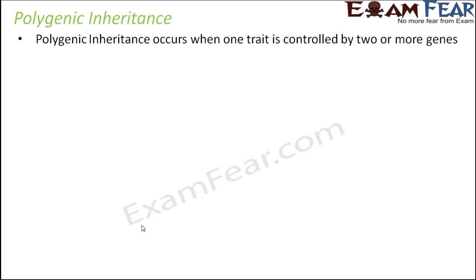Poly means many. So when one trait is controlled by two or more genes — basically one trait controlled by multiple genes — that is polygenic inheritance. When we say controlled by multiple genes, we mean it is controlled by multiple alleles which are located on different genes. These kinds of genes are often called interallelic genes.